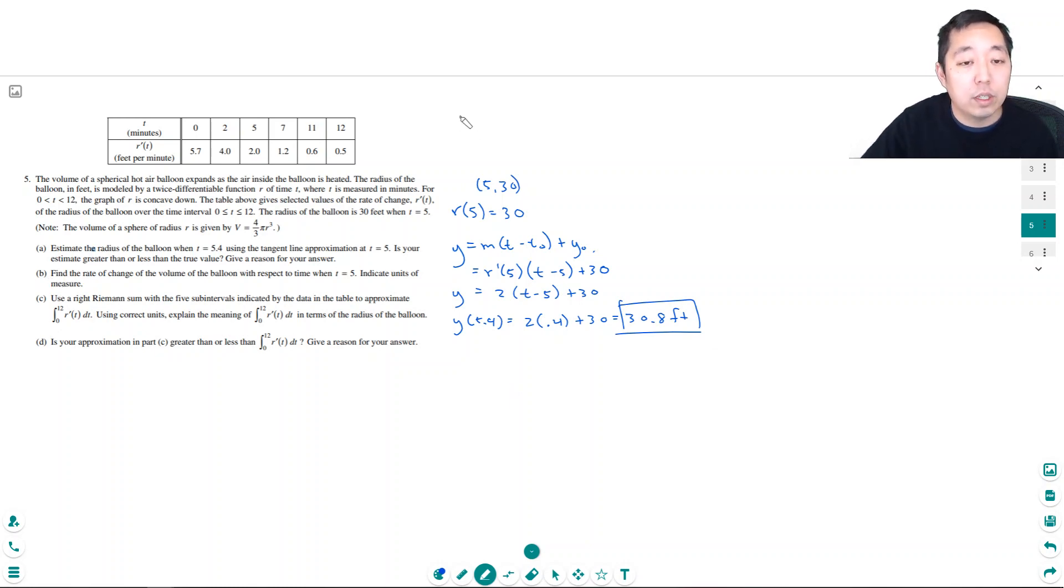Is it greater or less than the true value? Well, they told us that r of t is concave down. So r of t is increasing and concave down. So my line estimate here is going to overestimate because really it's flattening out over that time. This is an overestimate because it's concave down.